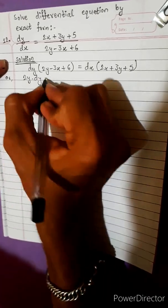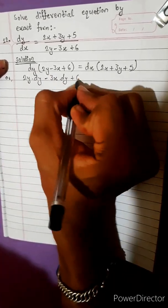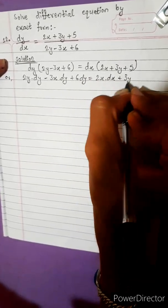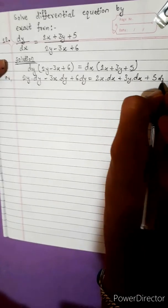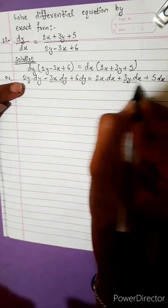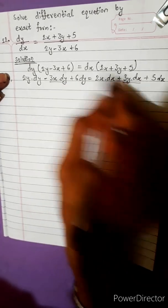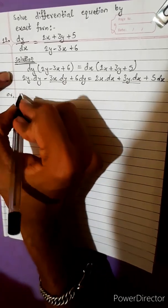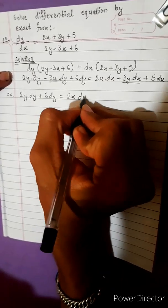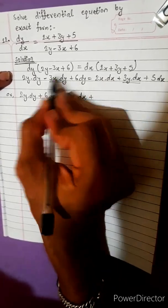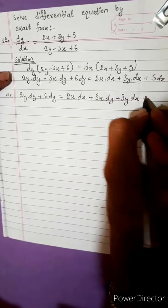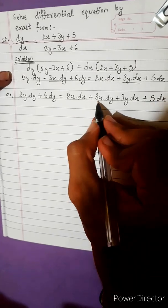Expanding: 2y dy minus 3x dy plus 6 dy equals 2x dx plus 3y dx plus 5 dx. Rearranging: 2y dy plus 6 dy equals 2x dx plus 3x dy plus 3y dx plus 5 dx.